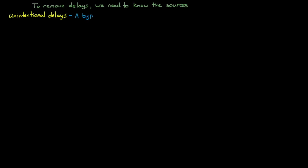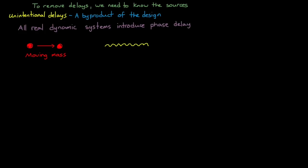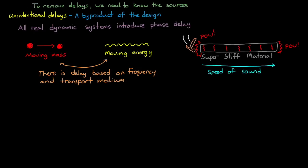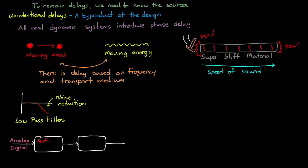To begin, let's talk about unintentional delays. These are delays that are a byproduct of the design, and not something that was included on purpose. All real dynamic systems introduce phase delay, or distort the signal by delaying some frequencies more than others. This is true whether it's a mechanical or electrical system. At some level, moving mass or energy around is dependent on the frequency of the input and the material it's moving through. Even the stiffest mechanical components act like a spring when you start talking about input signals that approach the speed of sound through that material.